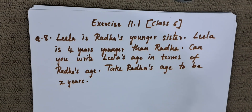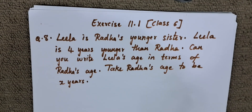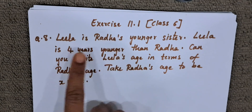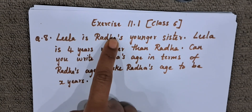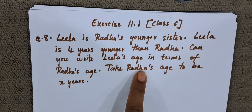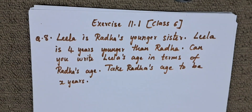They are telling us that Leela is Radha's younger sister, so Radha is the elder one. By how many years is Leela younger? Leela is younger to Radha by 4 years. They are asking us to take Radha's age as X years. Let us begin now.